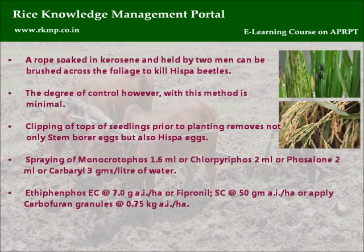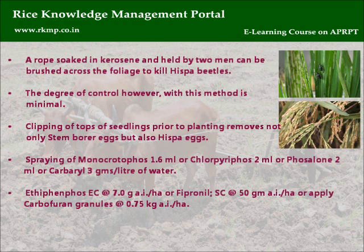Clipping tops of seedlings prior to planting removes both stem borer and Hispa eggs. Spray Monocrotophos 1.6 ml, Chlorpyrifos 2 ml, Phosalone 2 ml, or Carbaryl 3 grams per litre of water. Alternatively, apply Ethiofencarb AC at 7.0 grams AI per hectare, Fipronil SC at 50 grams AI per hectare, or Carbofuran granules at 0.75 kg AI per hectare.